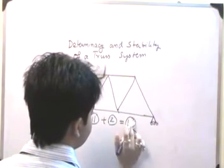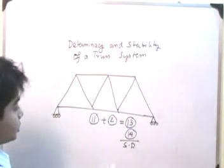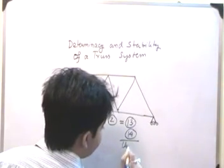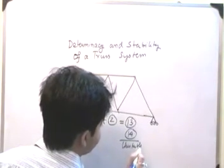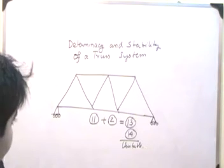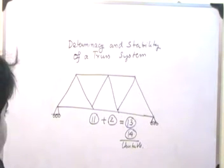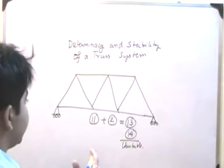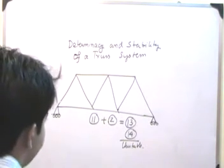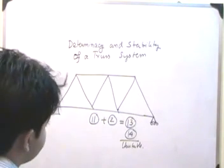With a roller replacing the hinge, we now have 13 unknowns but 14 equations of equilibrium. Since unknowns are fewer than equations, this structure is unstable. So the previous case was stable and determinate, while this modified case is unstable.